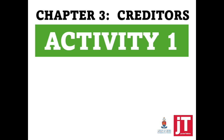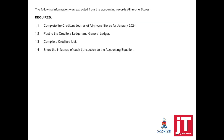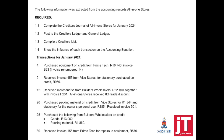Starting now with this activity. It says: the following information was extracted from the accounting records of All-in-One Stores. Required: complete the creditors journal, post to the creditors ledger and the general ledger, compile a creditors list, and show the influence of each transaction on the accounting equation. This activity will focus only on credit purchases.